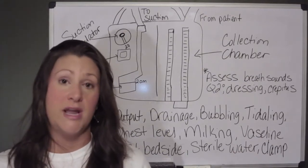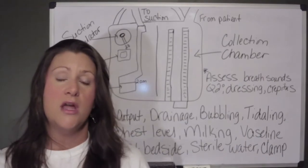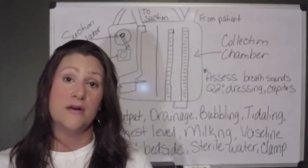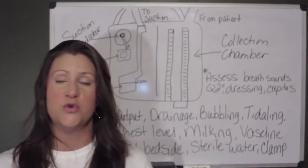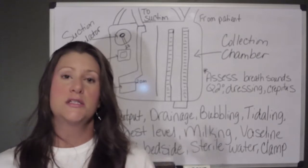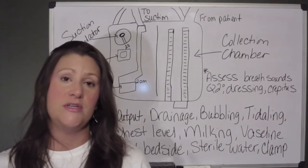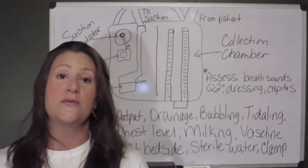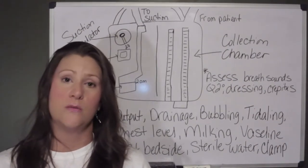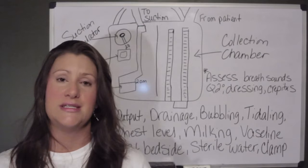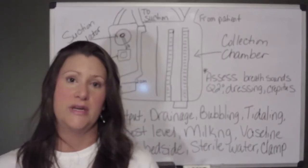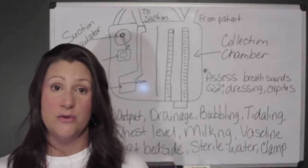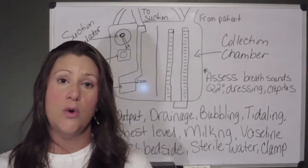Because after CABG, after CV surgery, fluid is just going to build up there in that area of the incision as a natural part of the healing process. So the CV surgeon will place that mediastinal chest tube to keep fluid off the heart and off the incision, to facilitate healing and actually prevent cardiac tamponade. Those are some of the reasons you're going to see those chest tubes.